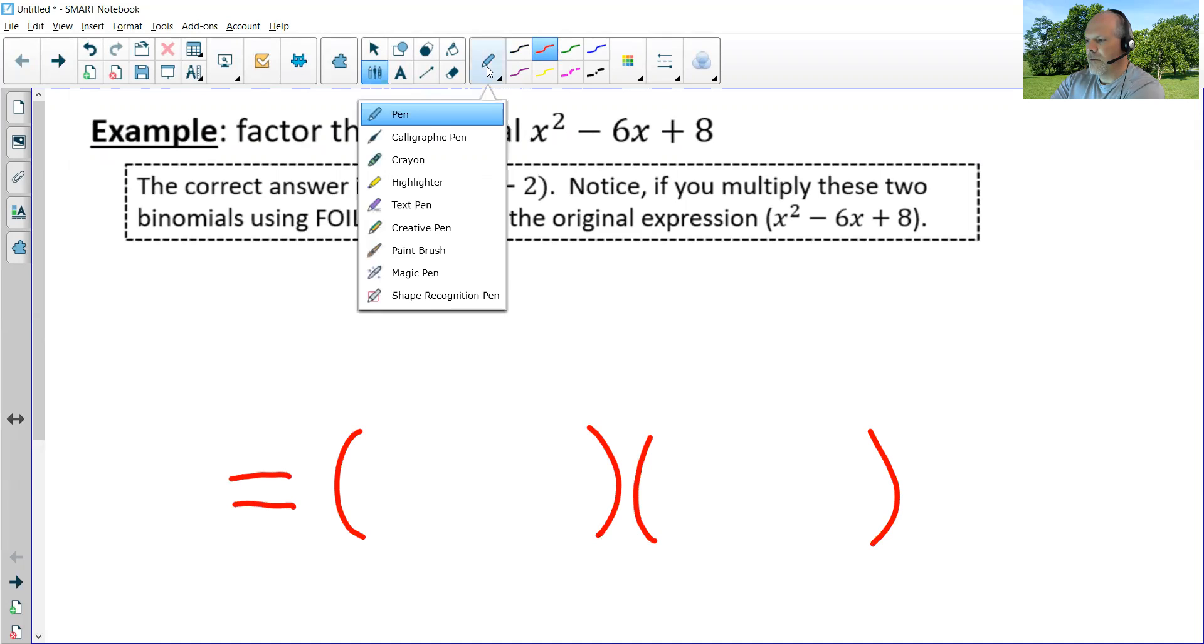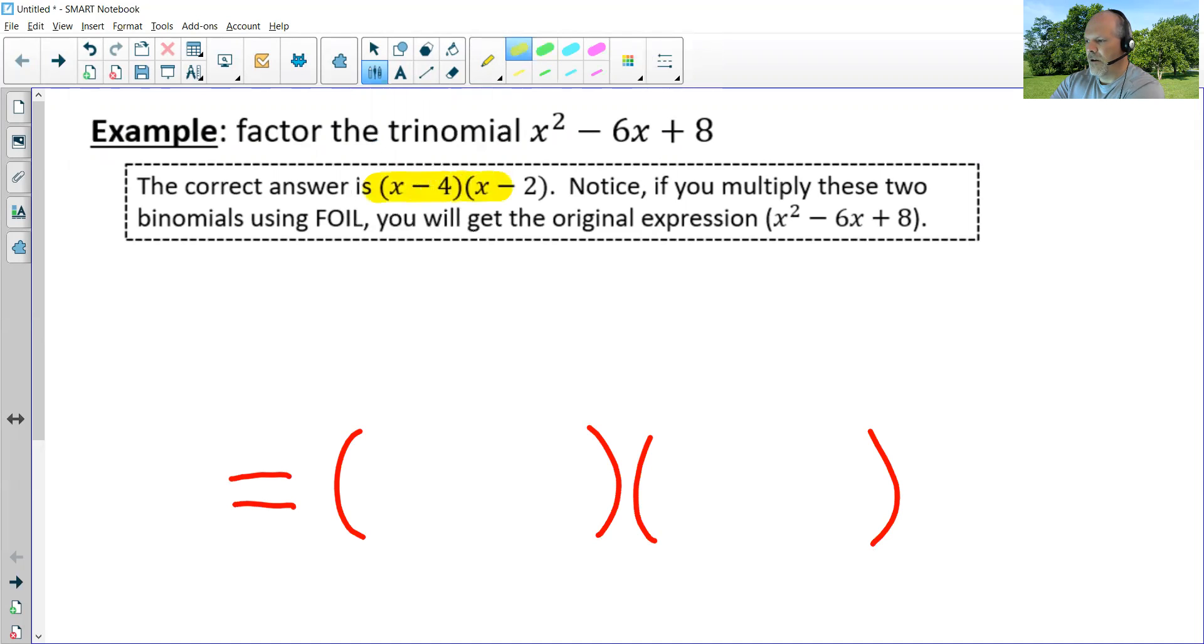Now I actually wrote the answer already right here so we can see what the answer is, and you can tell that it's the answer because when you multiply those two binomials in the answer, you end up with the original trinomial. But the question is how do you go from the trinomial to the product? Well, there's a method called guess and check that we'll be using and here's how it works.